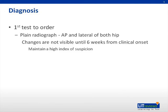Once Legg-Calvé-Perthes is suspected, it is important to quickly diagnose and refer to a pediatric orthopedist. The first test to order is a plain routine radiograph — two views, AP and lateral, of both hips should be obtained. It is important to note that radiographic changes may not be visible until six weeks from the first onset of symptoms, so a normal x-ray initially does not rule out Legg-Calvé-Perthes.